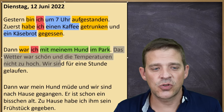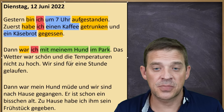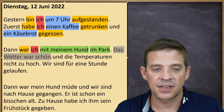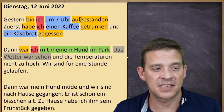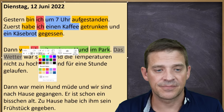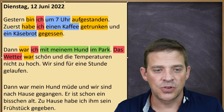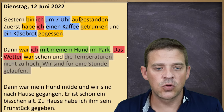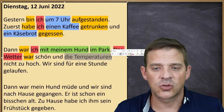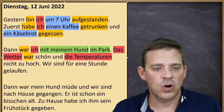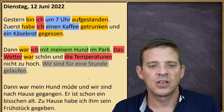Das Wetter war schön und die Temperaturen nicht zu hoch — The weather was nice and the temperatures not too high. We look at the first part: Das Wetter — there is just one noun, so this has to be the subject. Nouns are always capitalized. Das Wetter ist das Subjekt. War schön — war is the verb, schön is an adjective. Then: Die Temperaturen nicht zu hoch — again just one noun, so die Temperaturen is the subject in the second part. Hoch is an adjective. Next: Wir sind für eine Stunde gelaufen — we ran for one hour. Wir is the subject.